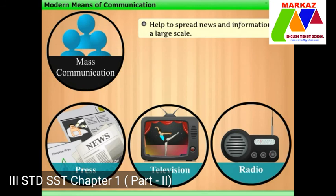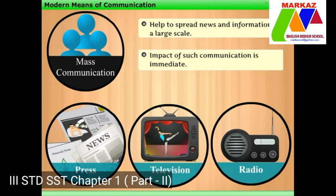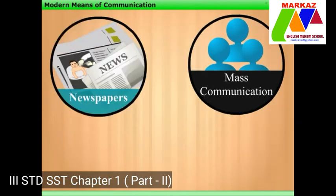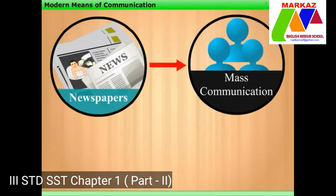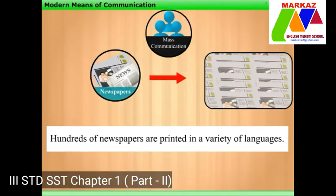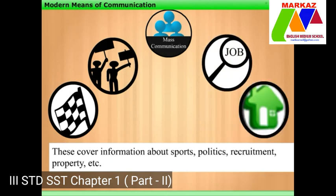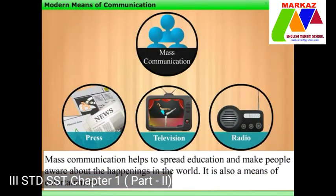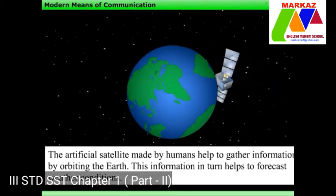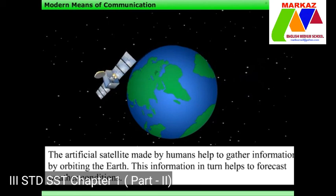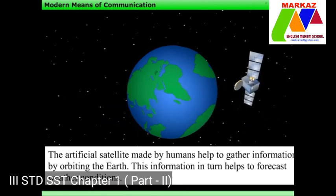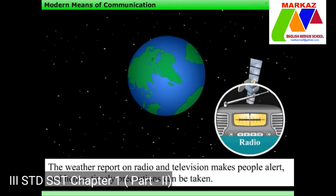Mass communication helps spread news and information on a large scale, and its impact is immediate. Newspapers are one commonly used means of mass communication — hundreds are printed in a variety of languages covering sports, politics, recruitment, property, and more. Mass communication also helps spread education and make people aware of happenings in the world, and it is a means of entertainment. Artificial satellites orbit the earth to gather information, which helps to forecast weather conditions. The weather report on radio and television makes people alert so that timely precautions can be taken.